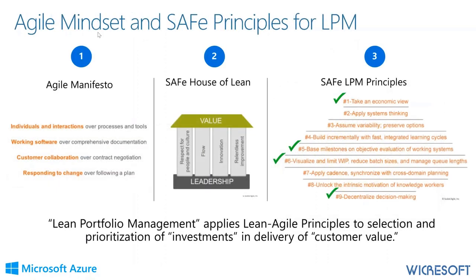To understand how we got to the SAFe LPM principles: it started with the Agile Manifesto. Scale Agile created SAFe and the SAFe House of Lean as core principles that an organization must ascribe to in order to begin a SAFe Scale Agile transformation. Lean Portfolio Management is now driven by four SAFe principles.